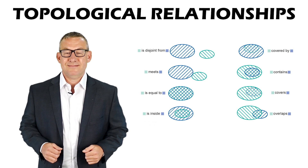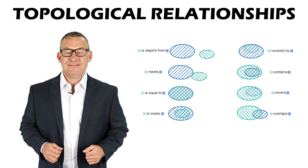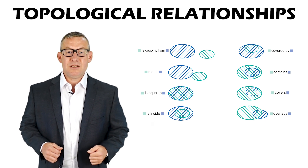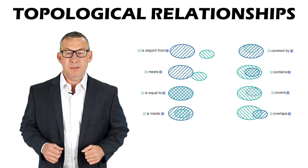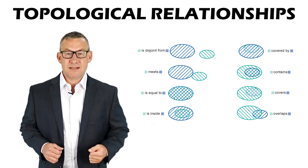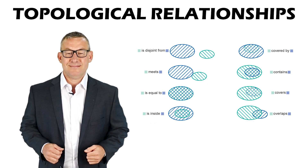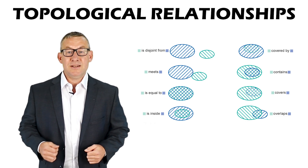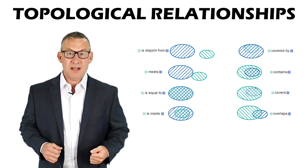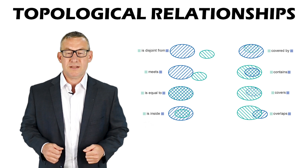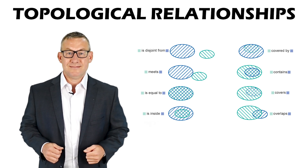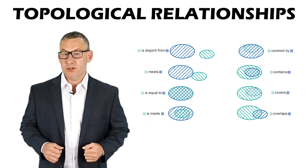Equals is when two features are topologically equal. Disjoint is when two features have no point in common — they form a set of disconnected geometries. Intersects is when two features have some common interior points. Touches is when two features have at least one boundary point in common, but no interior points.